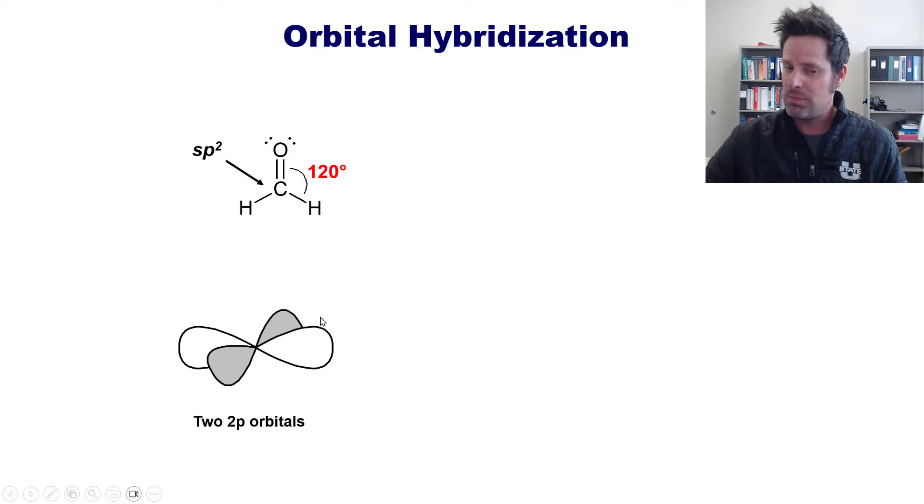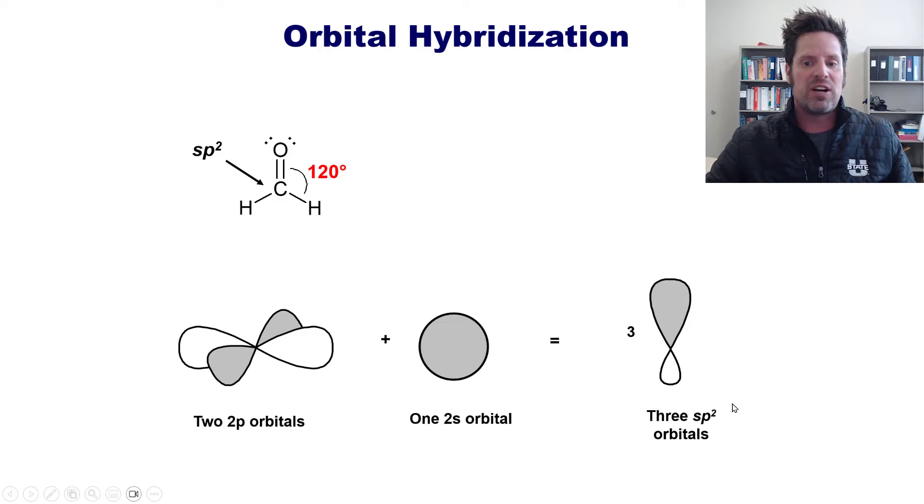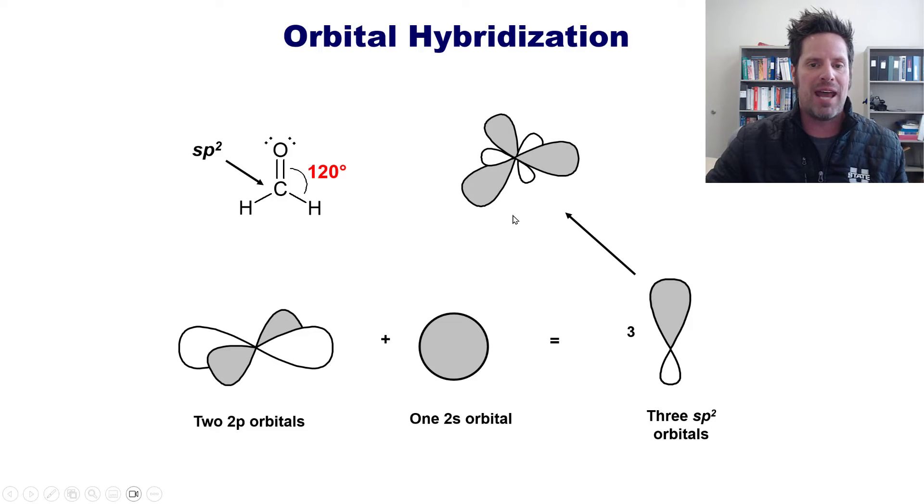For that, the carbon atom is going to take two of its 2p orbitals. In this case, I've grabbed the px and py, and then it combines and hybridizes them with its 2s orbital. It then lays them out into three separate and new orbitals that are called sp2 orbitals because they were made from one s and two p's. These three sp2 orbitals are then laid around the central carbon atom, separated by bond angles of 120 degrees.